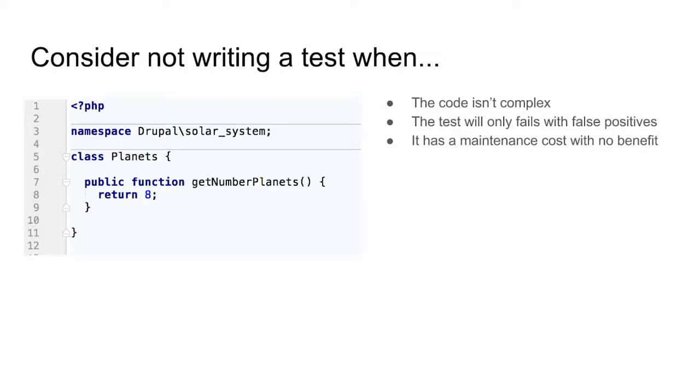Consider when not to write a test. My rule of thumb: if the only reason the test would fail is because a developer intentionally changed some code with no side effects, it's probably not a good test. If I wrote a test that the return value of get_number_of_planets always equals eight, the only time that fails is if someone decides Pluto is a planet again and puts nine. Tests carry a maintenance burden — they will break with false positives you have to fix, and they need love just like the rest of your codebase.